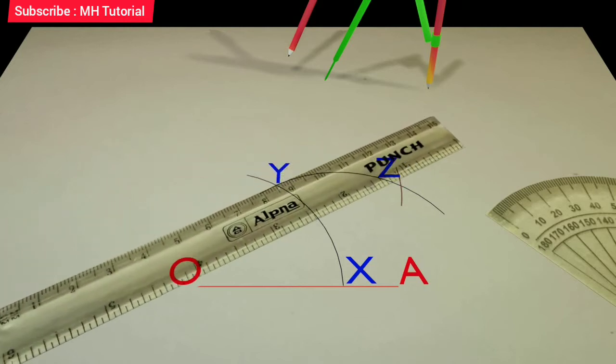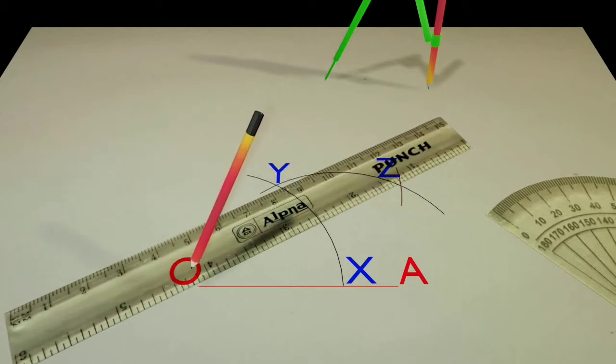Now align the ruler about the point O and the point Z and draw a line segment between them. This line segment is named OB.